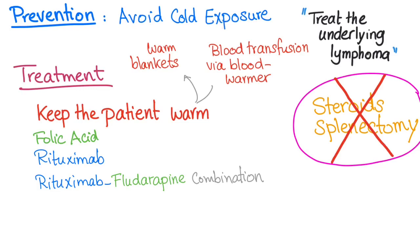Prevention: avoid cold exposure. Treatment includes warm blankets, blood transfusion via a blood warmer, folic acid (due to hemolysis), rituximab, and the combination of rituximab with fludarabine. Importantly, do not use steroids in cold agglutinin disease — steroids are used in the warm subtype but not in cold. No splenectomy either, because cold agglutinin disease is primarily intravascular, so removing the spleen will not help. Treat the underlying low-grade B cell lymphoma if present.